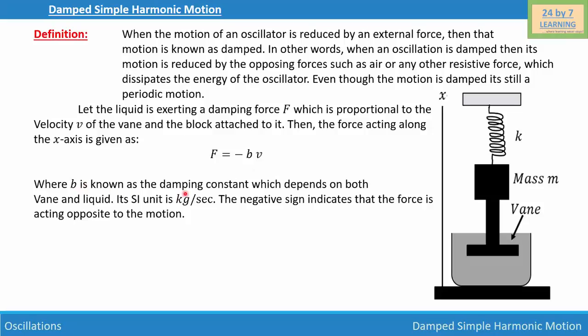Where b is known as the damping constant, which depends on both the vane and the liquid. Its SI unit is kg/sec. The negative sign indicates that the force is acting opposite to the motion.